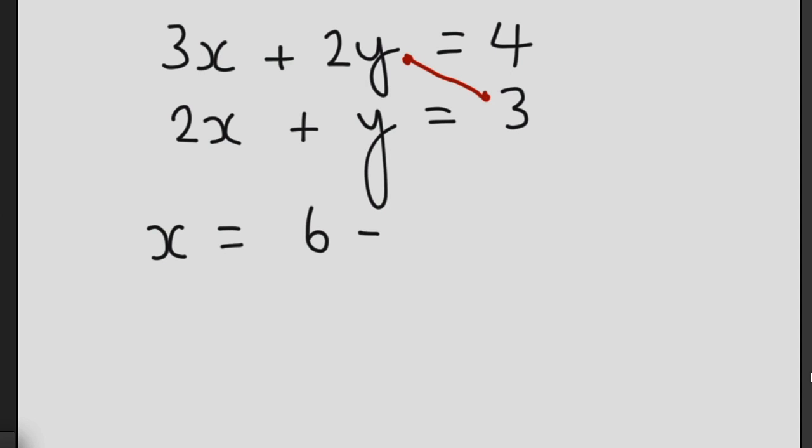So we're going to have 6, take away, and then we're going to cross multiply our 4 here with our 1y down here, or just our 1. So 4 times 1, that's equal to 4.